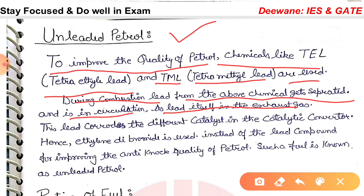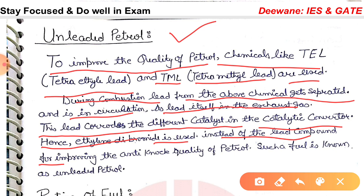Lead present in the exhaust gas corrodes the different catalysts in the catalytic converter. To prevent this, ethyl dibromide is used instead of lead compounds, for improving the anti-knock quality of petrol.